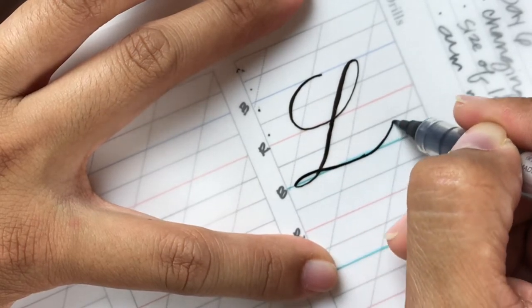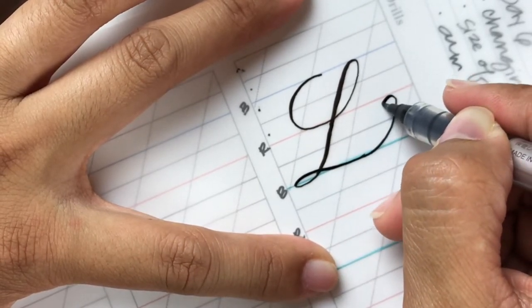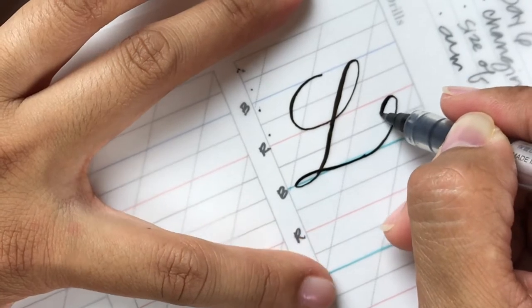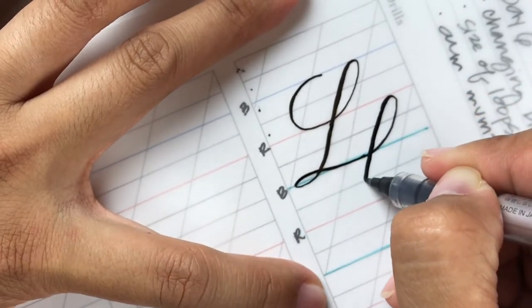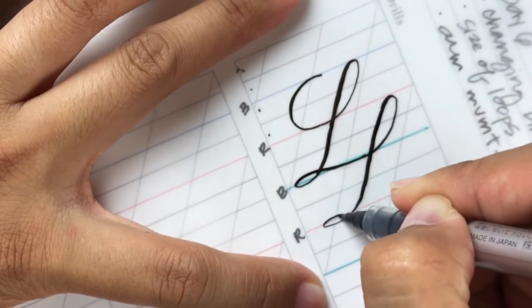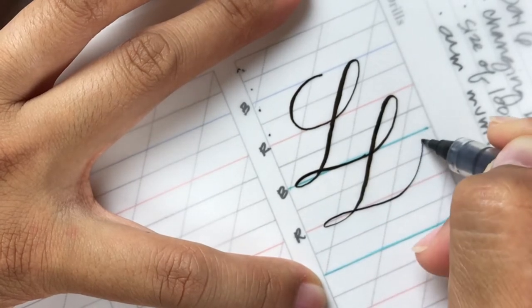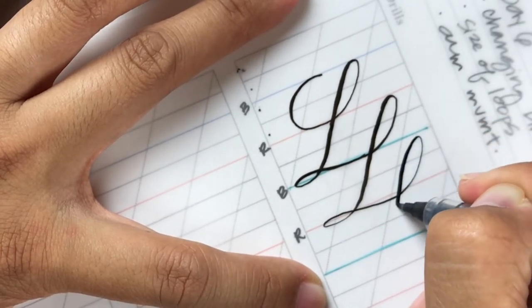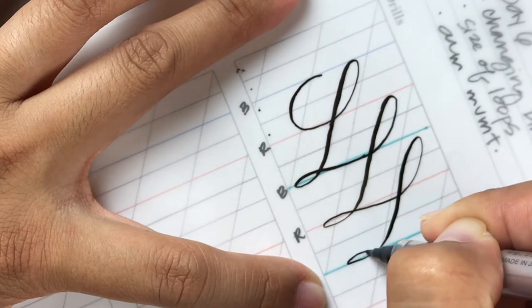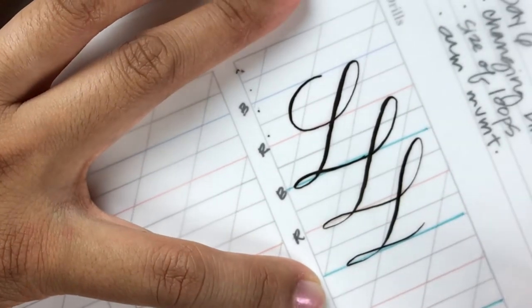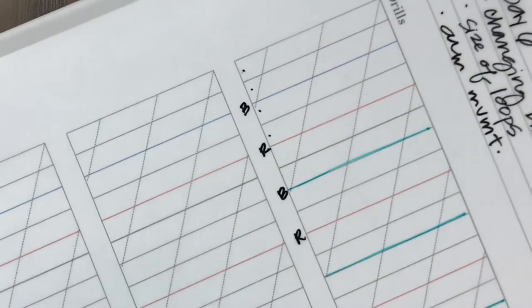But we're going to transition it into another L immediately. So I'm going to create this ascending stem loop, come down—so see why we need to use all of the lines. I just realized I was trying to demonstrate for you the L and I ended up doing the drill, so let's do it again now that you've seen it.